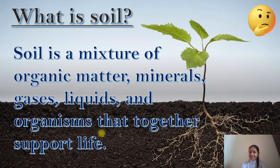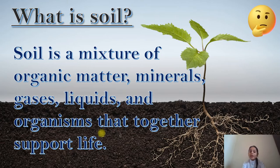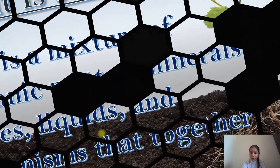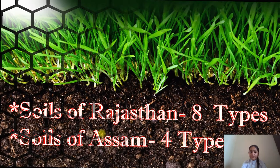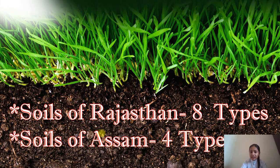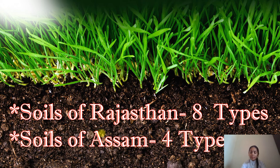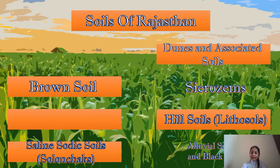Now let's move further to our topic, that is soil types found in Assam and Rajasthan. The soil found in Rajasthan can be broadly divided into eight main categories, and the soil found in Assam can be broadly divided into four main categories.